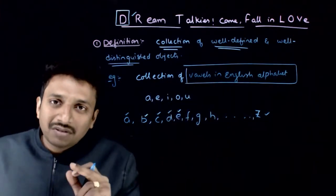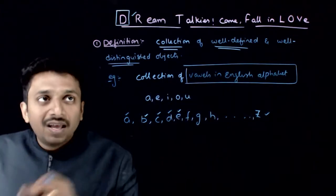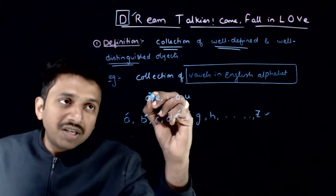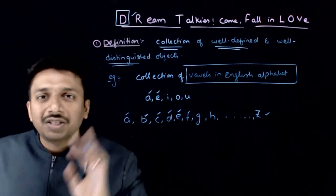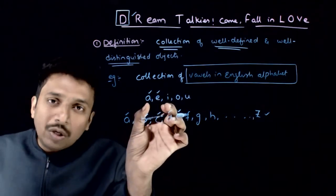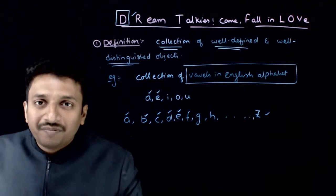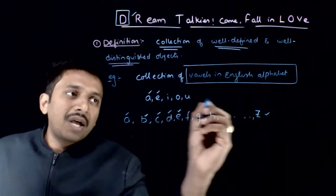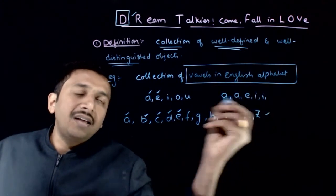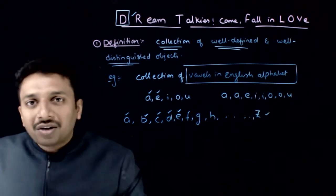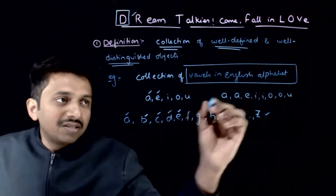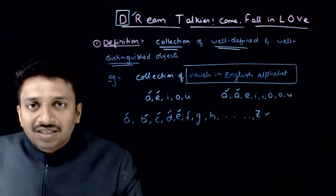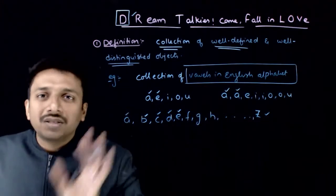A, E, I, O, U — the collection of vowels in the English language — is a well-defined collection. The collection also has to be well-distinguished. Well-distinguished means that each object should be distinguishable from the next object. So if you take any two objects in this set, they have to be distinguishable — they should not be exactly the same. That means, for the collection of vowels in English alphabet, you cannot write A, A, E, I, I, O, O, U, because if A is written two times, those two elements are not well-distinguished. Well-distinguishedness means that an element comes in the set only once — it does not come twice.